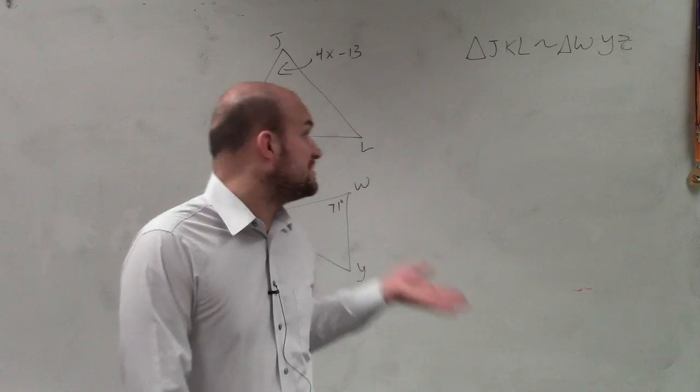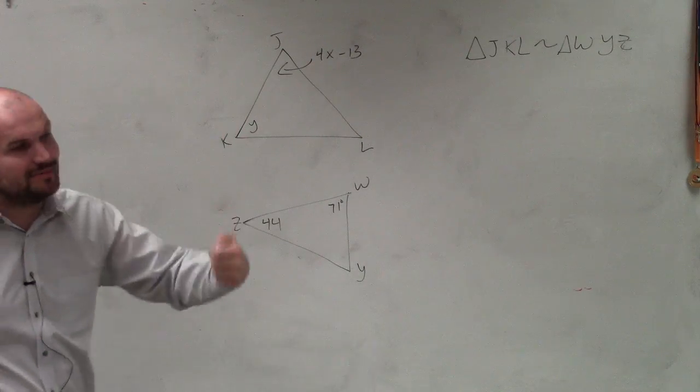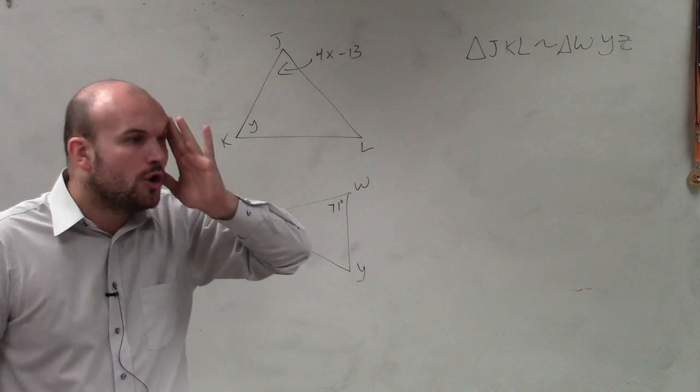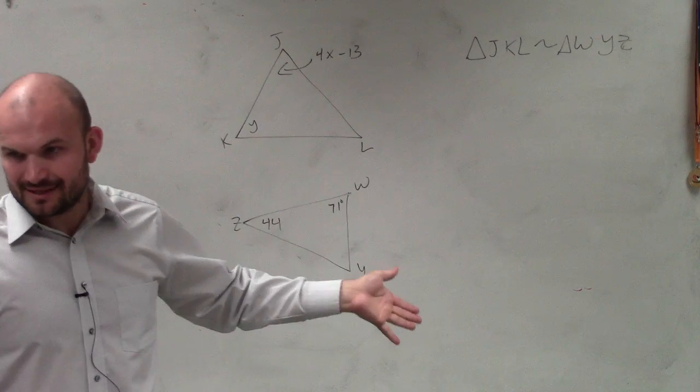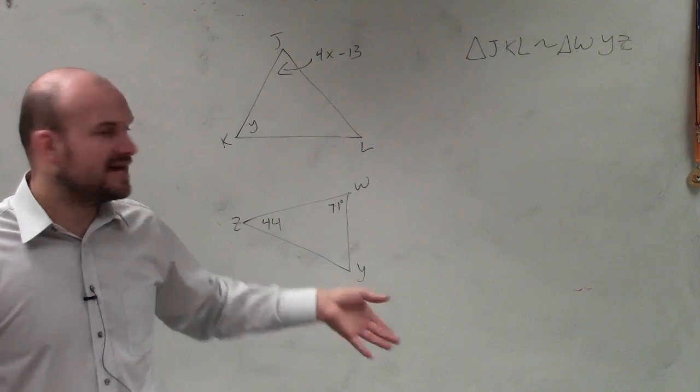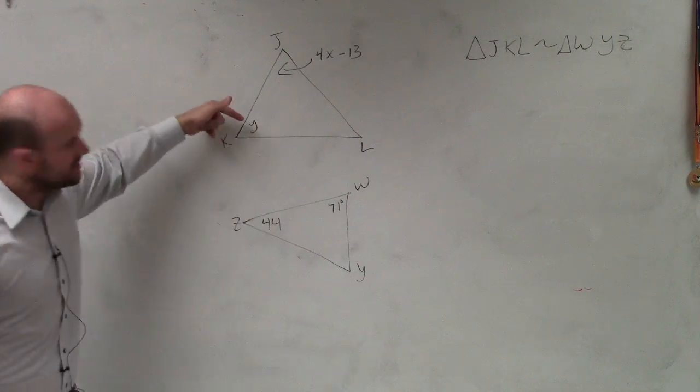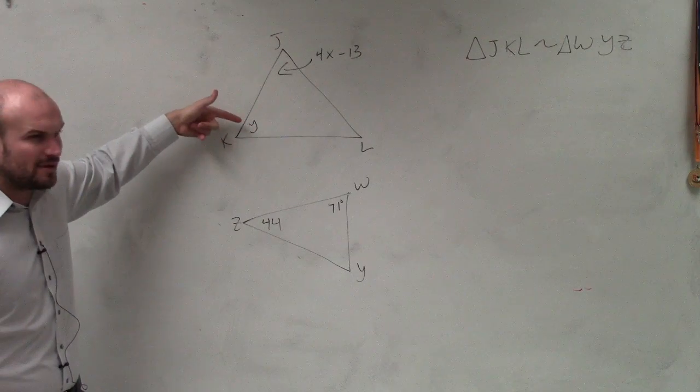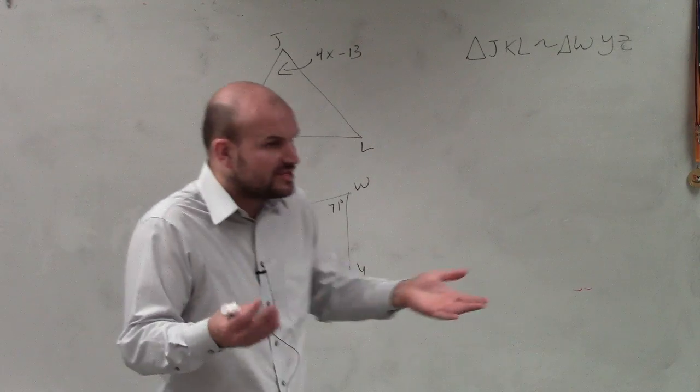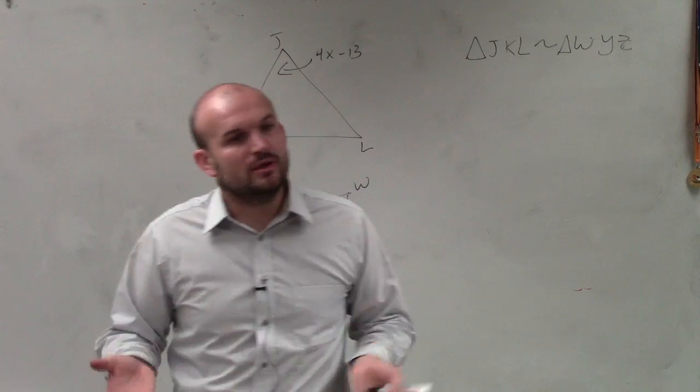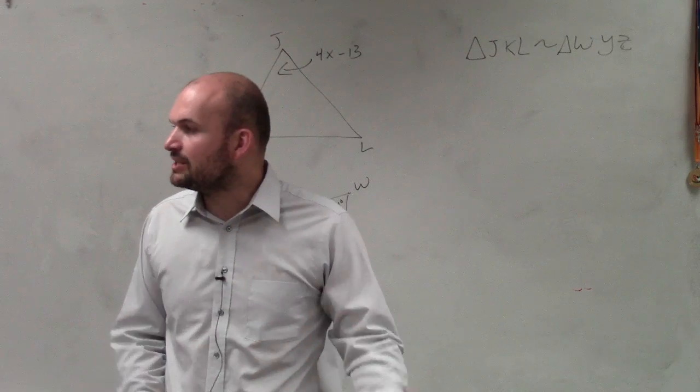And what the similarity statement states is triangle JKL is similar to triangle WYZ. This is so important because my drawings stink. It's not as easy for you guys to say which angle goes with this angle. You can't even look at these triangles and really be able to identify which angle goes with this angle. So the only thing we can rely on is my similarity statement.